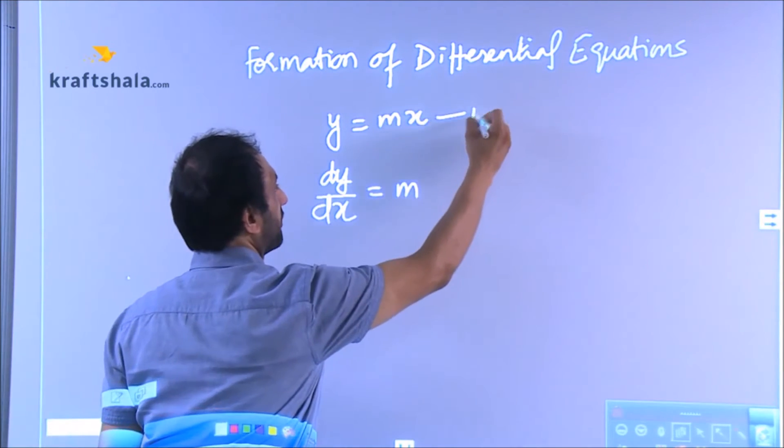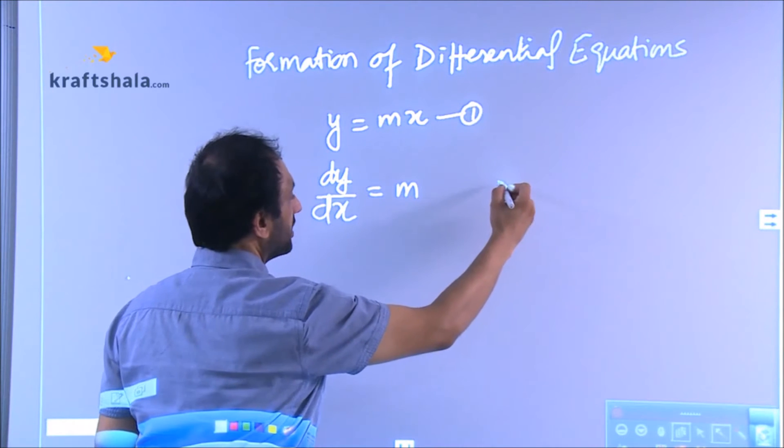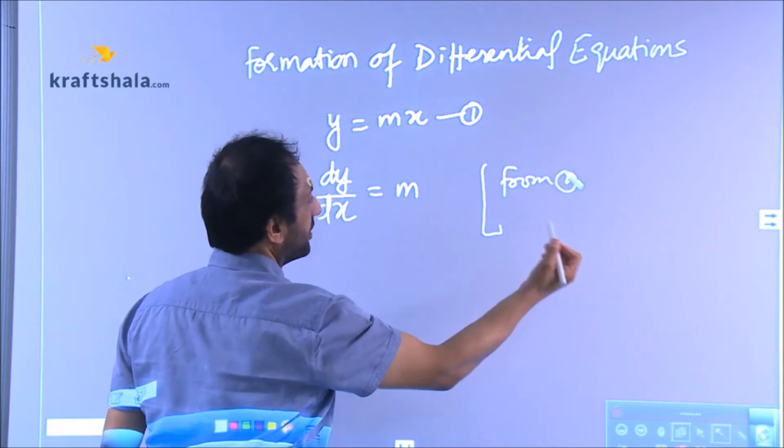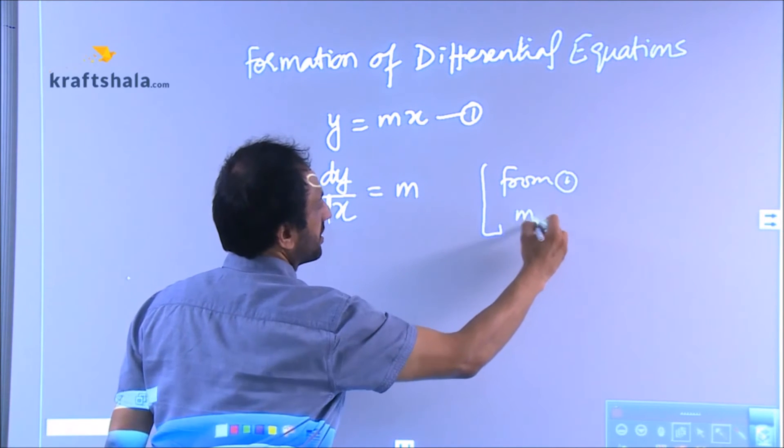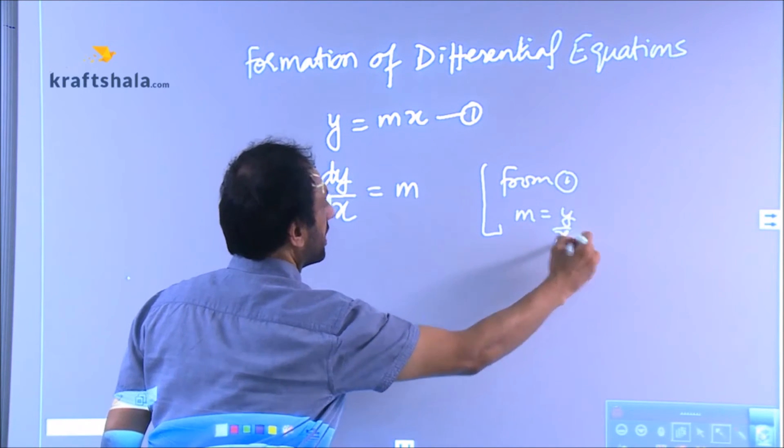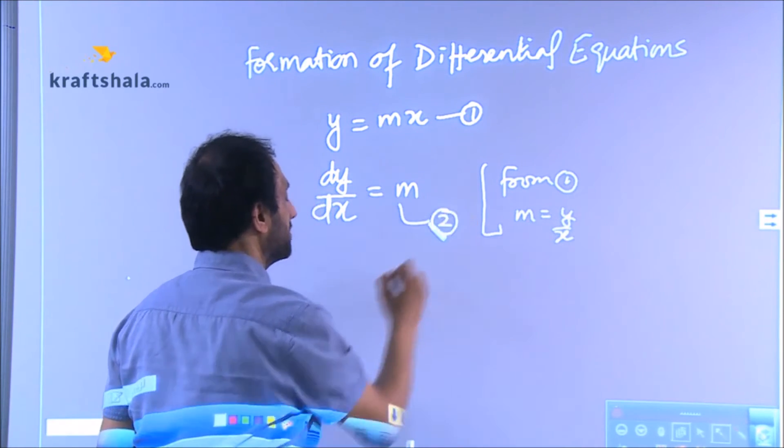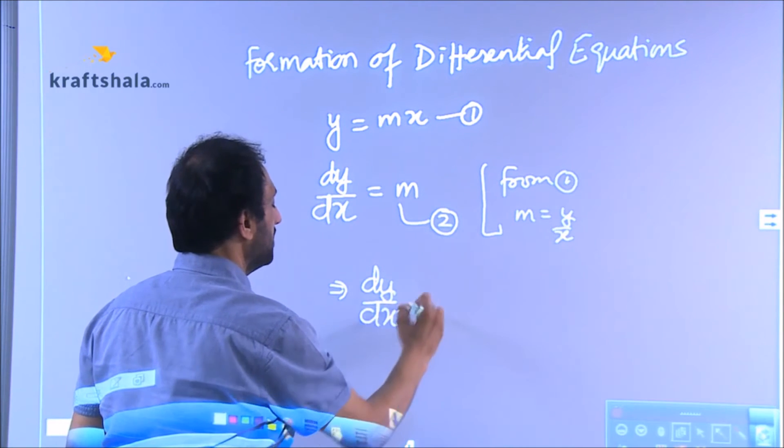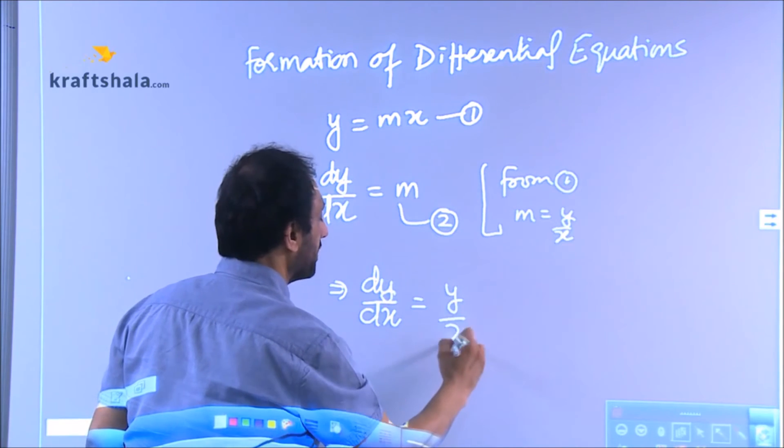Now from the equation above, equation number 1, I can find the value of M from 1, which is Y upon X. And then I can put that in equation number 2. What happens? dy by dx turns to Y upon X.